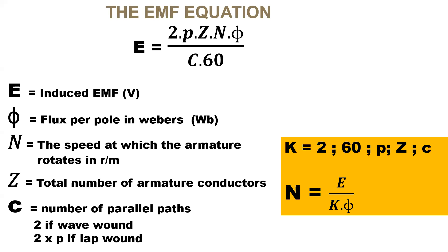We need to know the EMF equation. To calculate the total EMF, it is 2 multiplied by the number of pole pairs, the total number of armature conductors, the speed in revolutions per minute, and the flux per pole measured in Weber, divided by the number of parallel paths and 60. If it is wave-wound, C is equal to 2. If it is lap-wound, C is equal to 2 times the number of pole pairs.